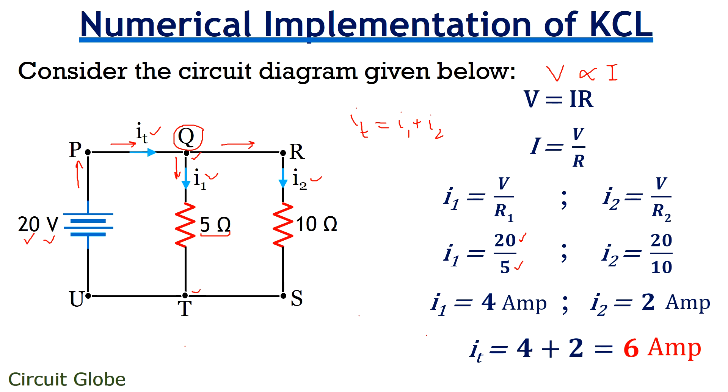As we can see in the figure that we are having 2 junctions. One is Q and the another is T. So, we can have a verified value of IT as I1 and I2, these 2 currents are coming back to junction T. So, we can have the summation of I1 and I2, the current which is reaching node U.